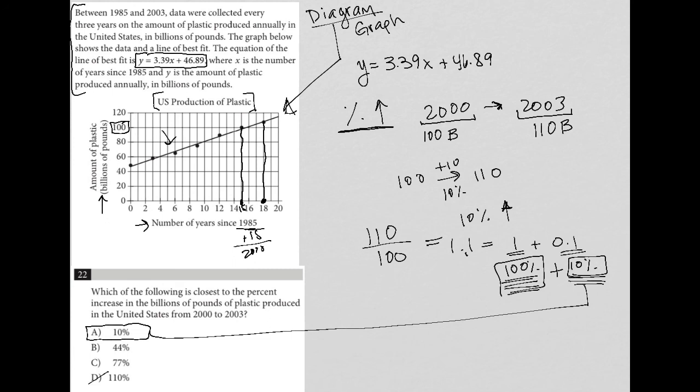While D is tempting, it is not correct. B and C are definitely not correct. We're looking for a percent increase, and 10% is the amount of increase between those two years.